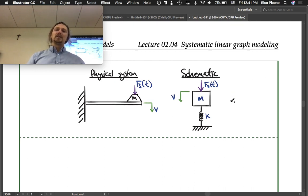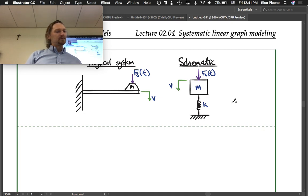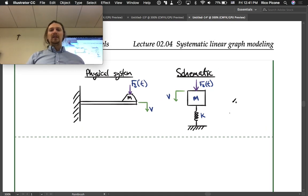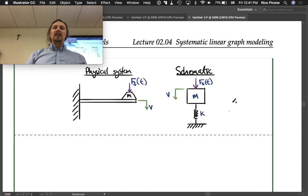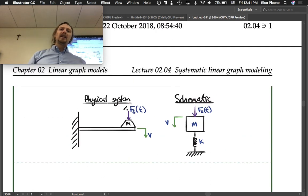I already assigned signs. I assigned the positive velocity direction to be in the same direction as this forcing function, and remember from the long discussion that's our preferred way to do it.